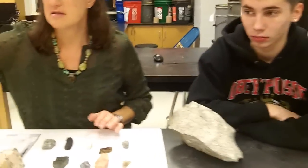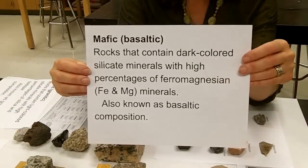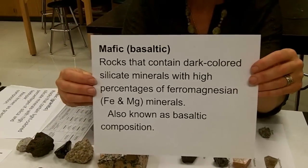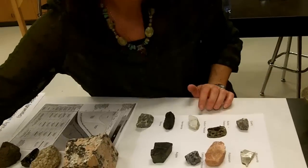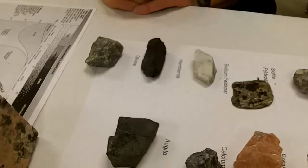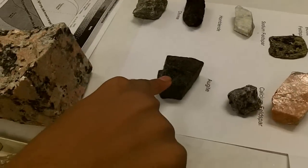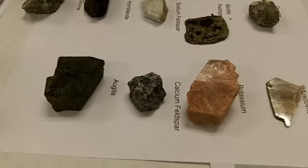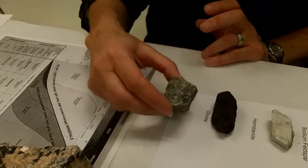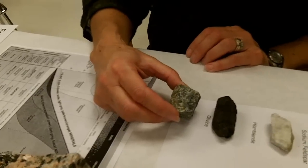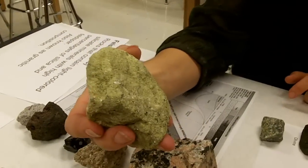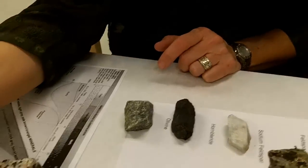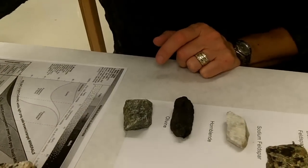Let's move to the mafic rocks — sometimes called basaltic. Mafic rocks are rocks that contain the dark color minerals that are rich in ferromagnesian elements. Which minerals would be present in a mafic rock? Hornblende — perfect. Augite. Calcium rich feldspar — good. What about olivine? This one's a little tricky. Olivine, even though it can be a green or yellowy green color, is a very mafic or even ultramafic mineral. That's the one that doesn't fit our pattern so well.